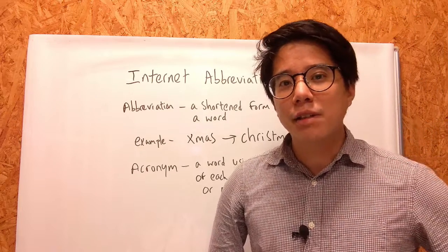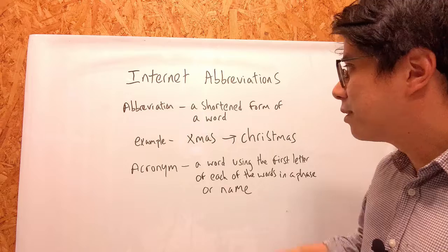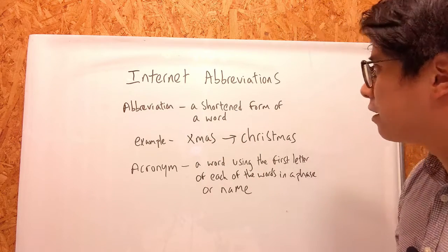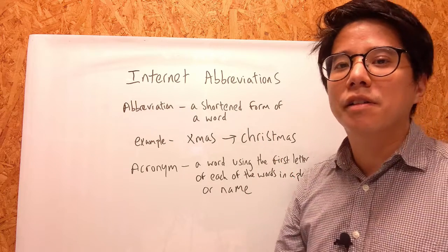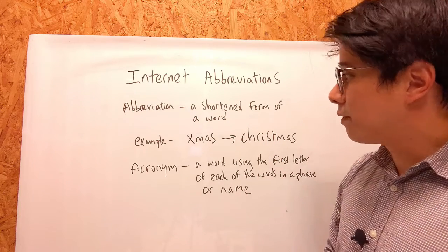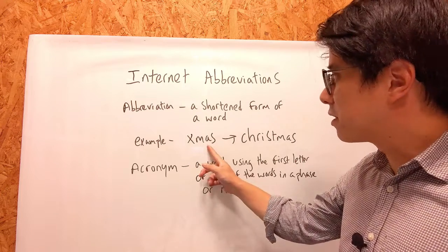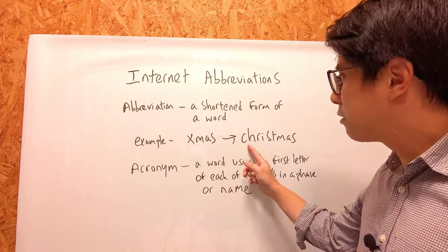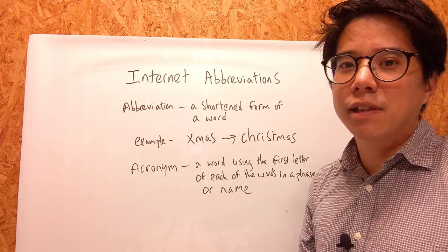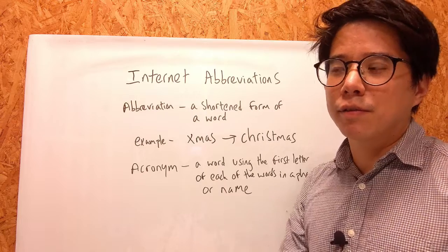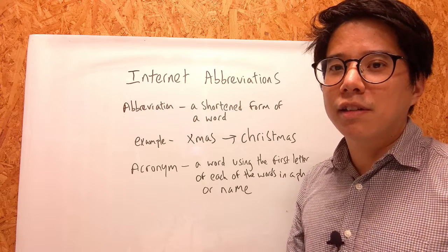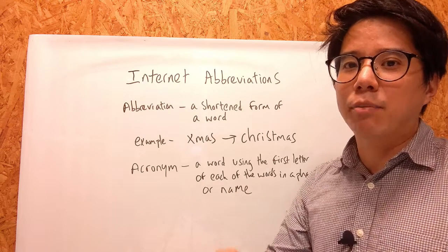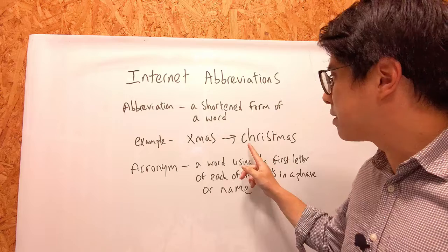Getting straight into it — what is an abbreviation? Here I've written a definition. An abbreviation is a shortened form of a word. An example of this is Xmas. In the UK people use Xmas to mean Christmas, especially when you're writing lots of Christmas cards. People might just write Happy Xmas and it means Happy Christmas.